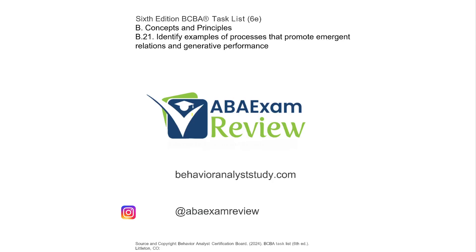Welcome back to ABA exam review and the continuation of our 6th edition BCBA task list. Today we're continuing concepts and principles with processes that promote emergent relations and generative performance. Maybe one of the more technical, complex ideas on our task list — since the 5th edition, they've taken ideas we know in a different way and reclassified them into emergent relations and generative performance. We're going to show you why emergent relations is really just an umbrella where these other terms live, and same with generative performance.